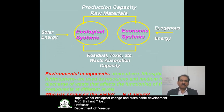Now consider the significance of ecological systems versus economic systems. Ecological systems are driven by solar energy; economic systems are driven by exogenous energy. Ecological systems produce the raw material that ignites economic systems. Ecological systems are efficient — they do not have any residuals or toxics — whereas economic systems produce residuals, toxics and waste. Natural ecological systems have the capacity to absorb these residuals, but they have their own limits. When we cross that limit, the problem arises.